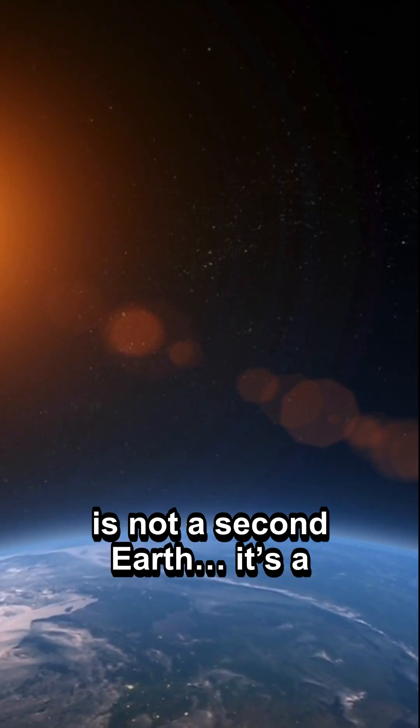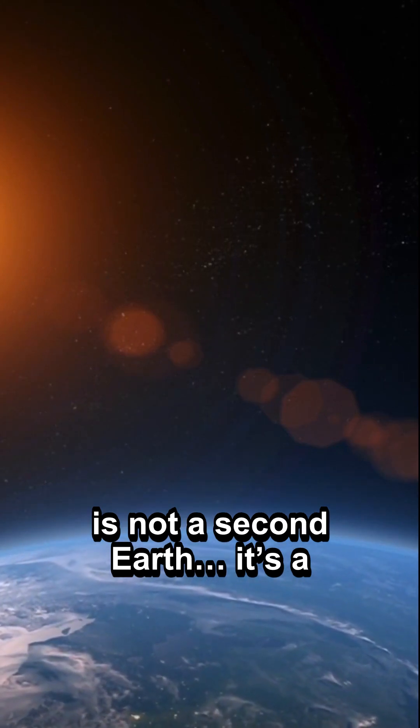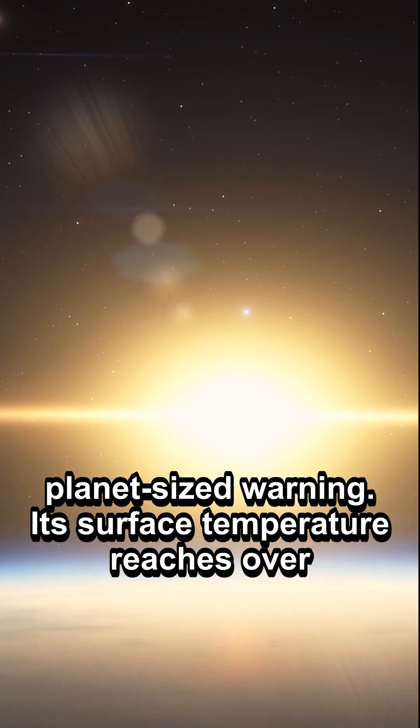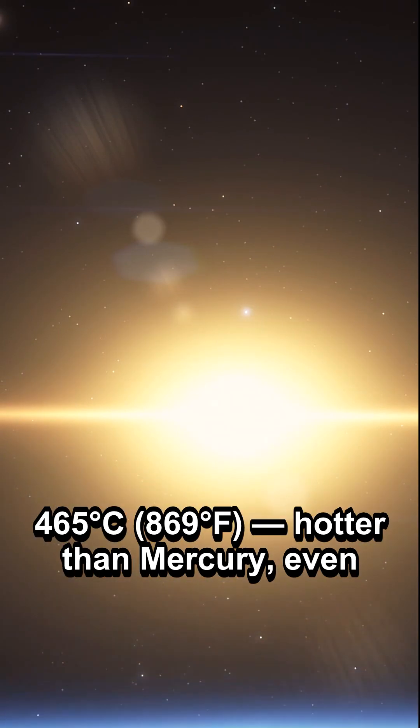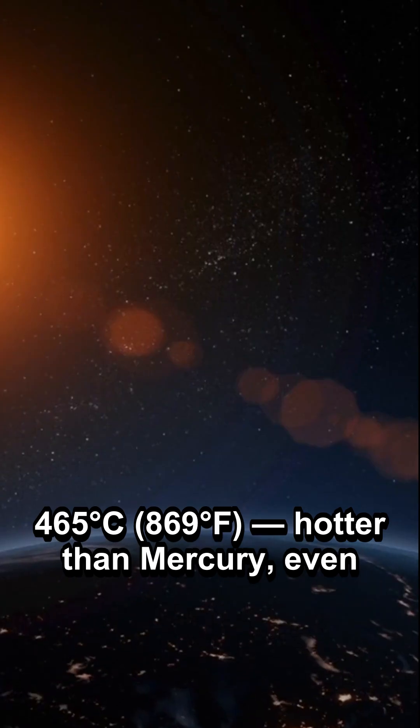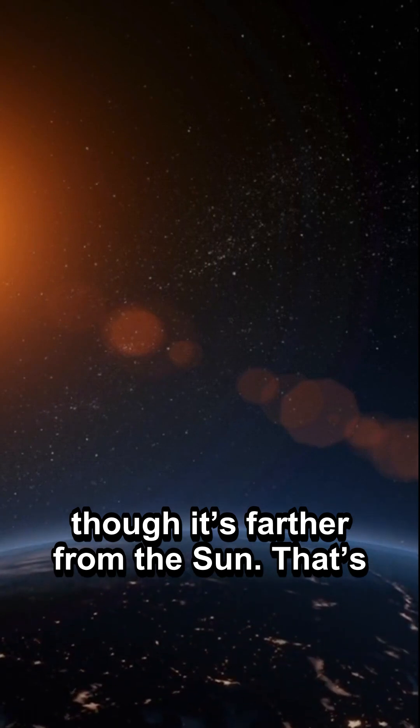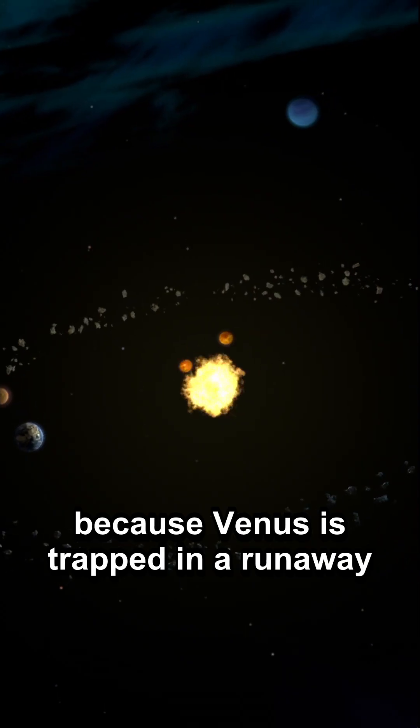Venus is not a second Earth. It's a planet-sized warning. Its surface temperature reaches over 465 degrees Celsius, 869 Fahrenheit. Hotter than Mercury, even though it's farther from the Sun.